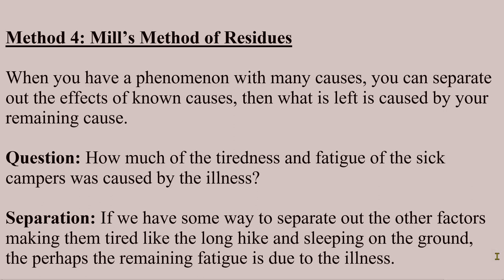You may have noticed that we skipped method three. Method three is the method of similarities and differences, combining those two together to make a causal inference. I decided to skip that section because we get most of what we need from considering the two methods independently. So method three — the method of similarity and difference — that one you can read on your own.